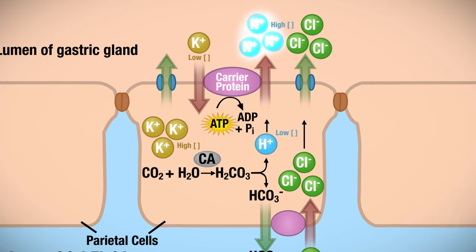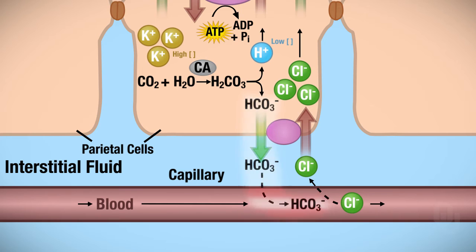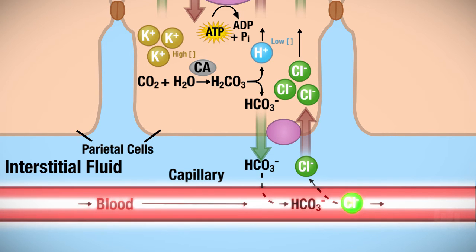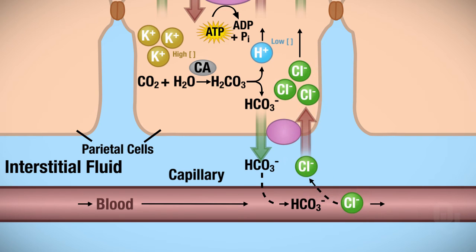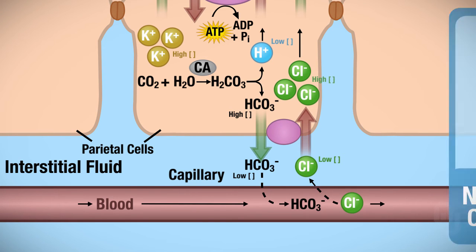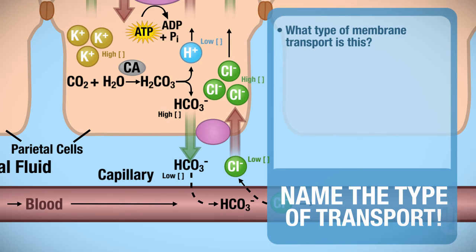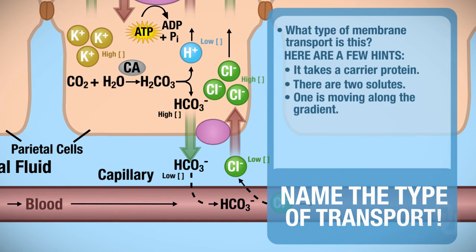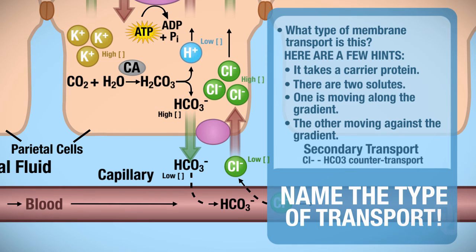Now we have hydrogen ions in the lumen, but we still need chloride ions to get there. Once we make bicarbonate in the cytoplasm of the cell, we can transport bicarbonate out of the cell and into the blood. Meanwhile, we bring chloride ions into the cytoplasm using a carrier protein, with no ATP indicated. We're moving bicarbonate from high concentration inside toward lower concentration in the blood, and moving chloride ions from low toward higher concentration. So this must be secondary active transport.